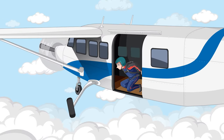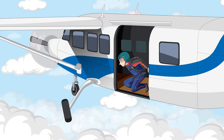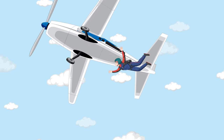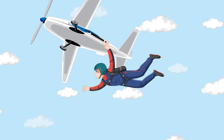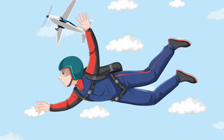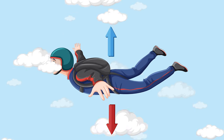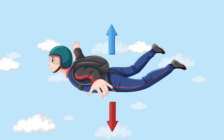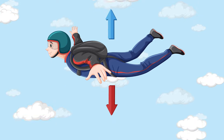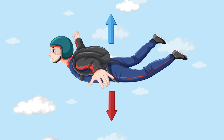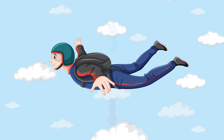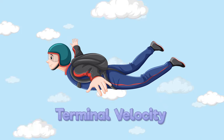When a skydiver leaps from a plane, they initially accelerate due to the force of gravity. As they fall, air resistance gradually increases until it balances with the force of gravity, and the skydiver reaches terminal velocity.